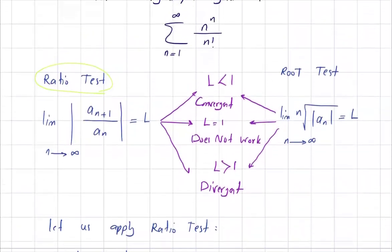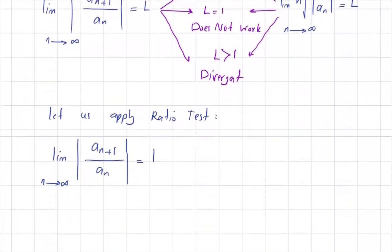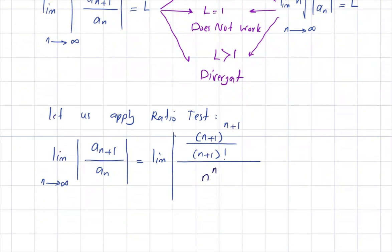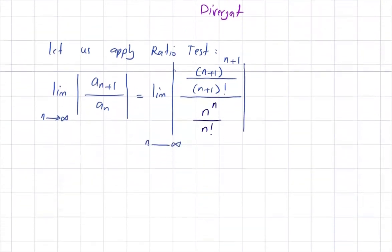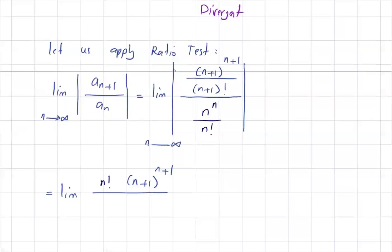Our a_n is n to the power n divided by n factorial. So we have the limit of n+1 to the power n+1 divided by (n+1) factorial, over n to the power n divided by n factorial. Everything is inside the absolute value, but everything is positive so we are not really worried about that. We have n factorial times (n+1) to the power n+1, divided by n to the power n times (n+1) factorial.